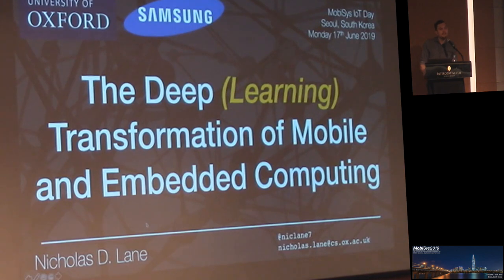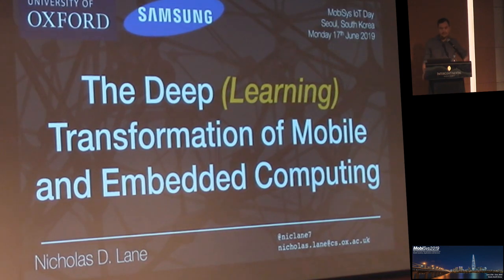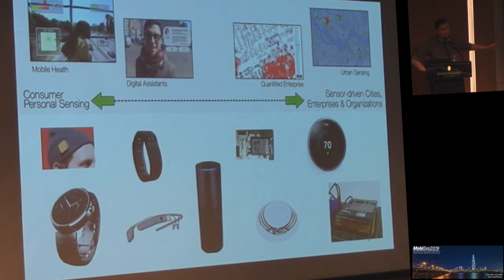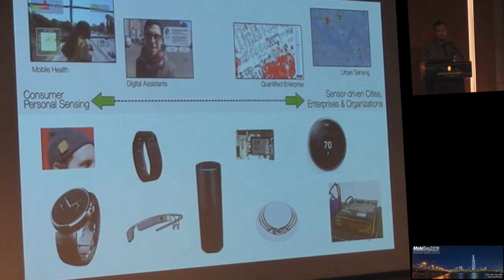What I want to talk to you about today is the impact that deep learning is having on IoT devices of all shapes and sizes. Feng gave a wonderful introduction to this area. As you can see in this slide, at the bottom portion we see the diversity of IoT and mobile embedded devices that exist today, ranging from smart watches, devices you wear on your head, to those that you have in the house. It spans a wide application area, ranging from mobile health, digital assistants, quantified enterprise scenarios, and urban sensing.